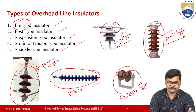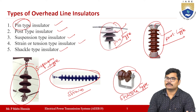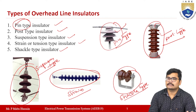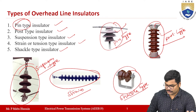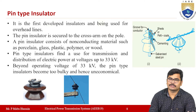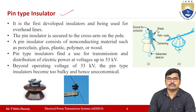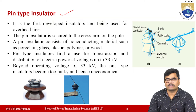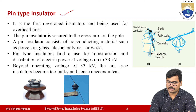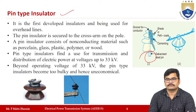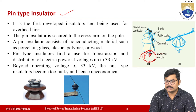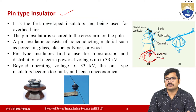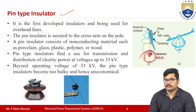The pin type insulator is the first developed insulator among all types. It is used in overhead transmission line systems and is secured to the cross arm of the pole through a pin. If you observe the pin type insulator, there is one galvanized steel pin below — because of this it is called a pin type insulator. This pin is connected to the cross arm of the pole.